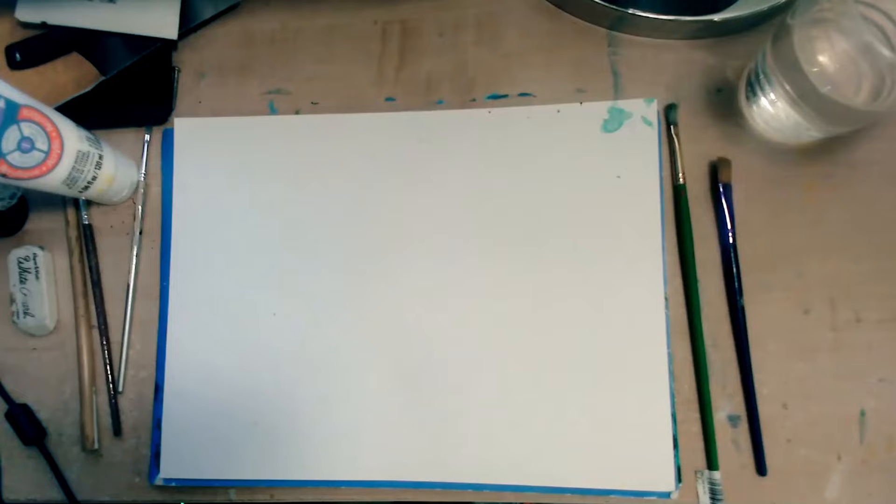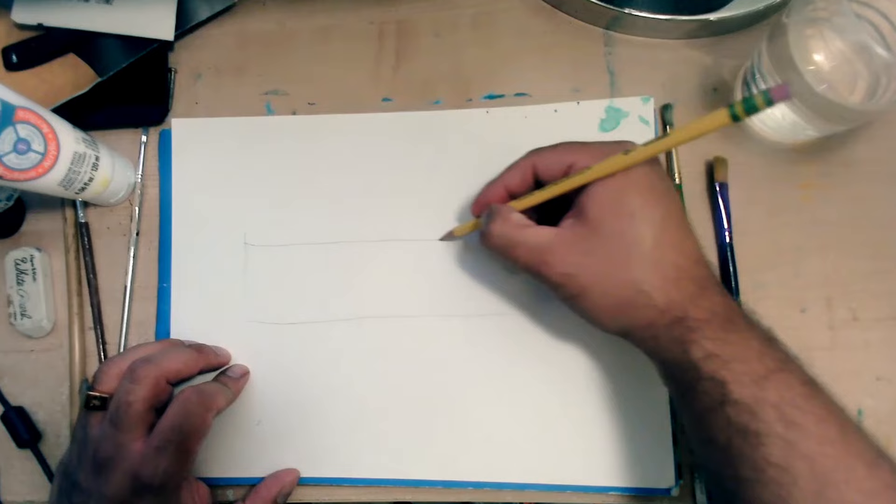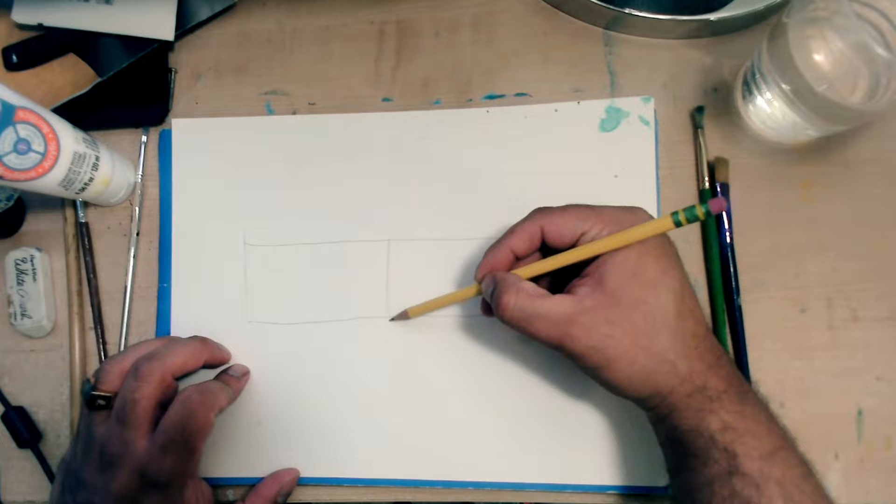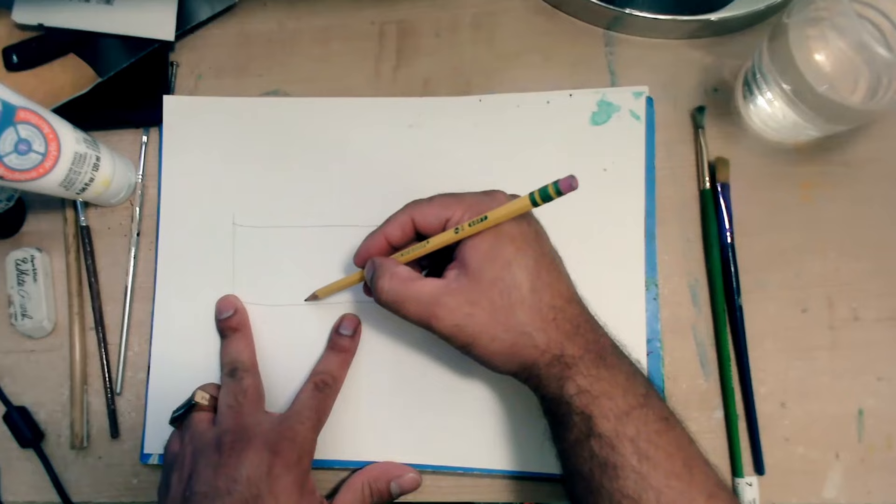So what I want us to do is to draw a rectangle like this. Okay. And then I'm going to divide it in half. So I think half is somewhere around there. And after that, I'm going to divide this in half. And then this side, I'm going to also divide it in half.